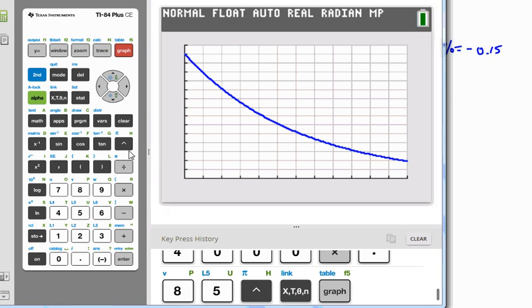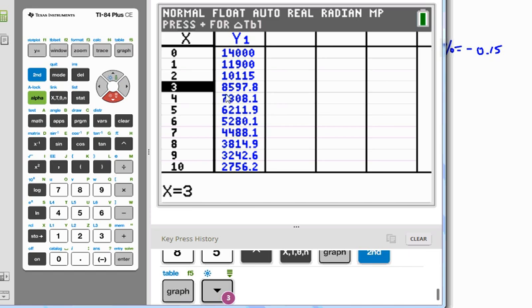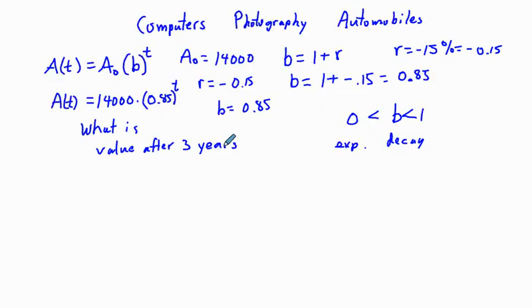And you can trace or go to the table view. If we go to three years, our car is going to be worth $8,598. So that's our answer.